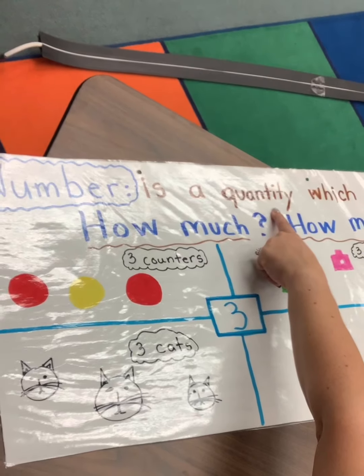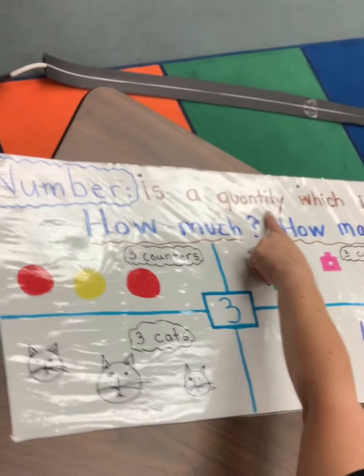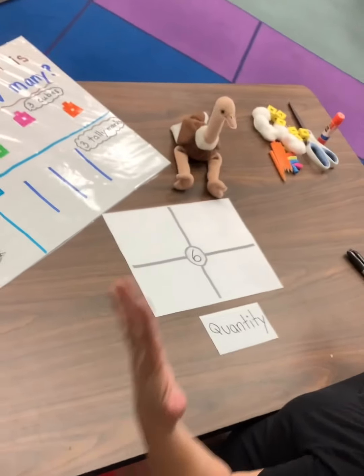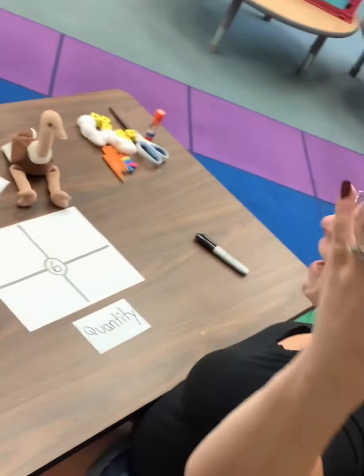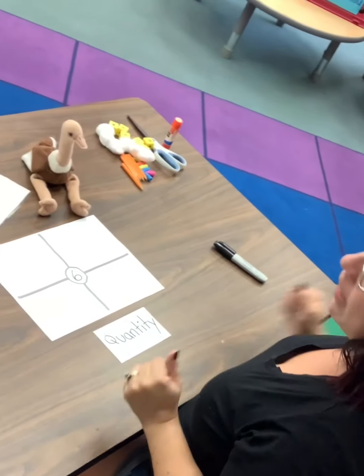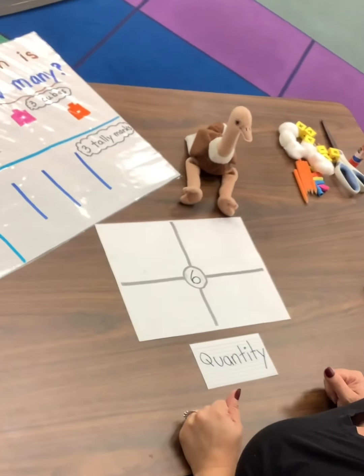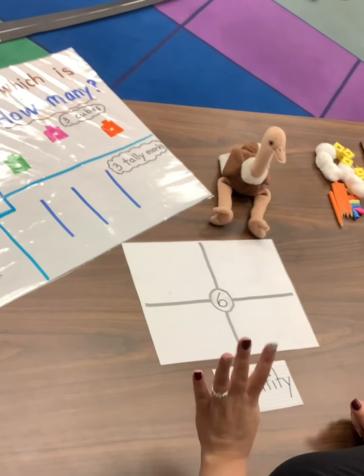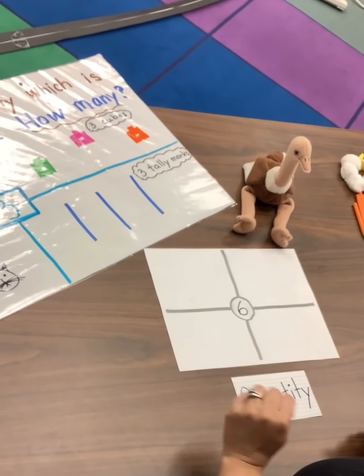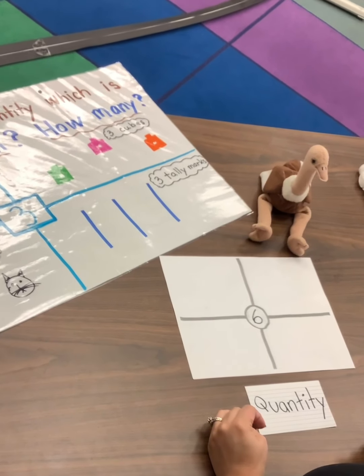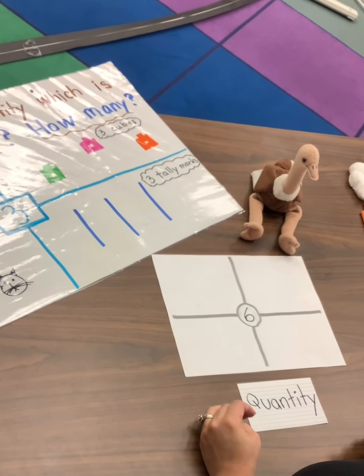So remember in class today we learned that a number is a quantity, which is how much or how many you have of something. In class we did the number four and we found different ways to make four as a quantity.